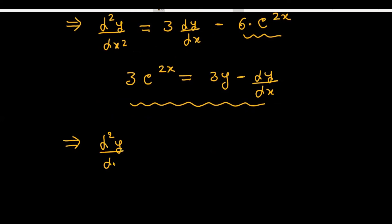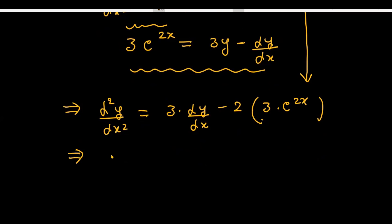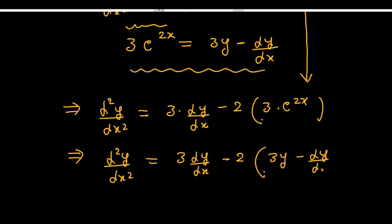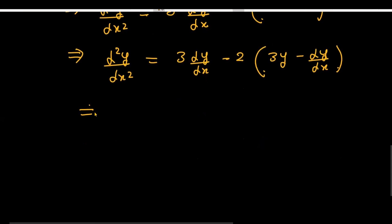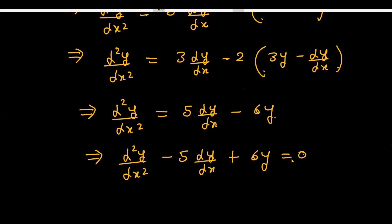From equation 3, we have 3e^(2x) = 3y - dy/dx. Substituting into d²y/dx² = 3(dy/dx) - 6e^(2x) = 3(dy/dx) - 2(3e^(2x)) = 3(dy/dx) - 2(3y - dy/dx), we get d²y/dx² = 5(dy/dx) - 6y. Rearranging: d²y/dx² - 5(dy/dx) + 6y = 0, which is what we needed to prove.